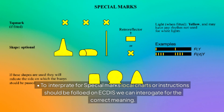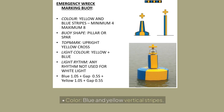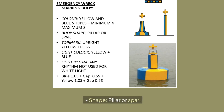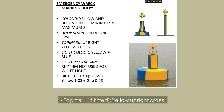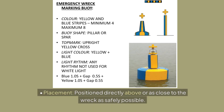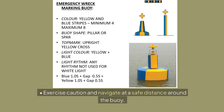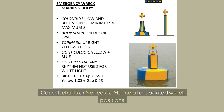Emergency wreck marking buoy. Purpose: temporary marking of newly discovered uncharted wrecks to prevent accidents. Color: blue and yellow vertical stripes. Shape: pillar or spar. Top mark: yellow upright cross. Light: alternating blue and yellow, one second each. Placement: directly above or as close to the wreck as safely possible. Passing rule: exercise caution and navigate at a safe distance; consult charts or notices to mariners for updated wreck positions.